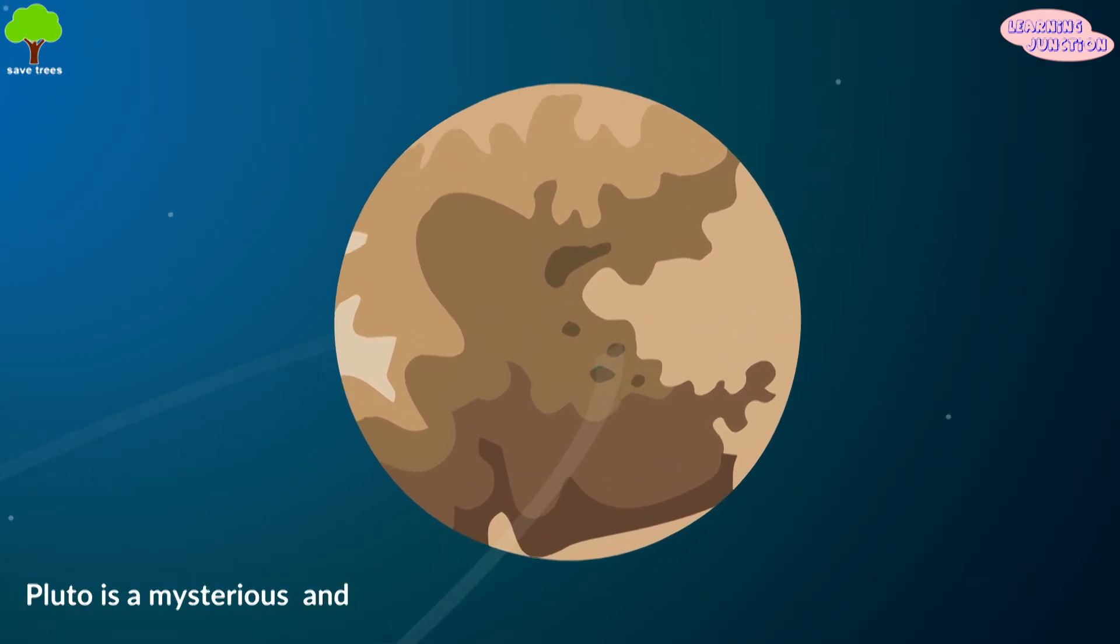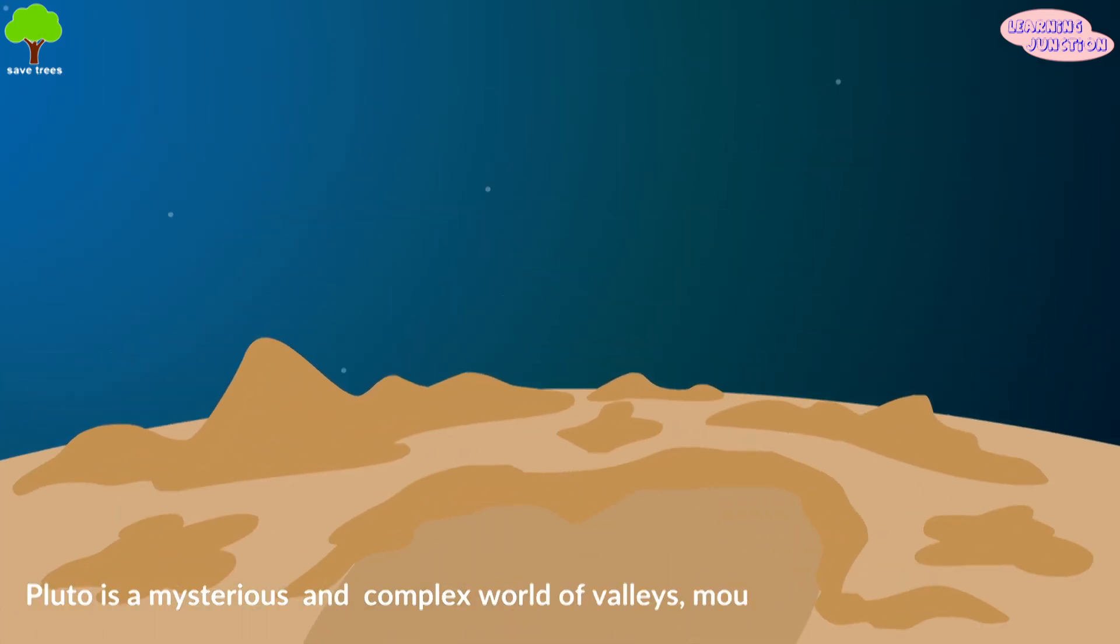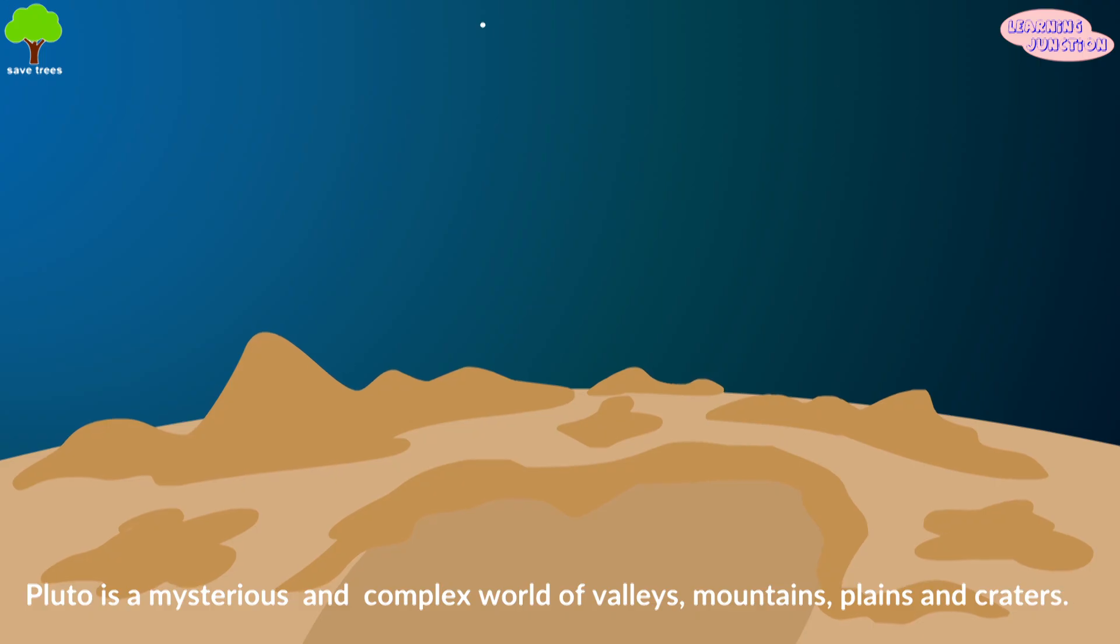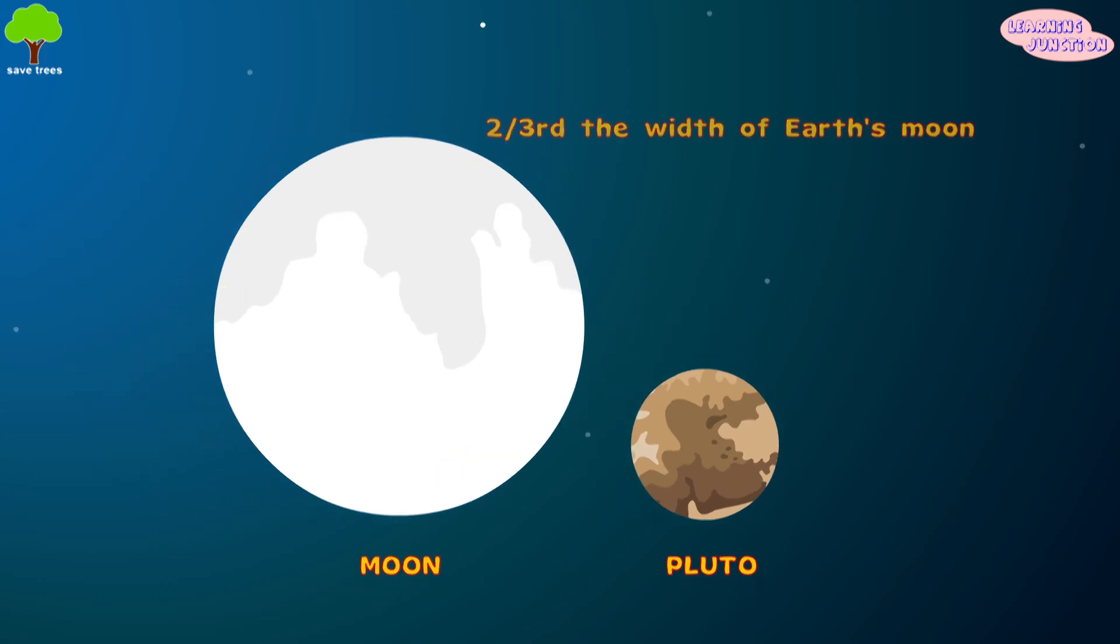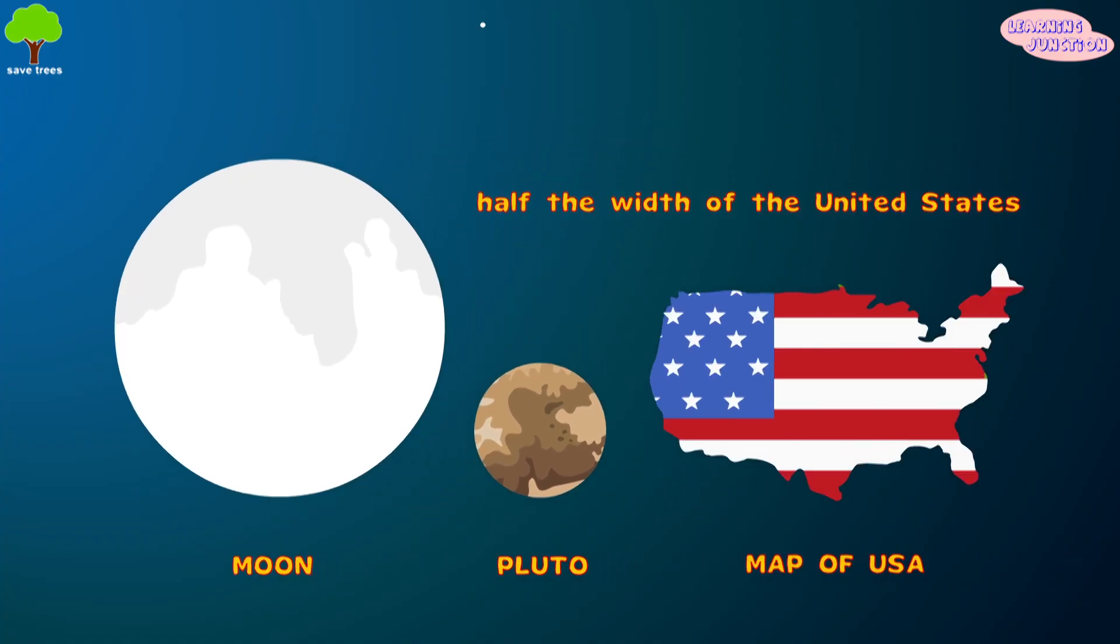Pluto is a mysterious and complex world of valleys, mountains, plains, and craters. It is approximately 1,400 miles wide. That's about two-thirds the width of Earth's moon, or half the width of the United States.